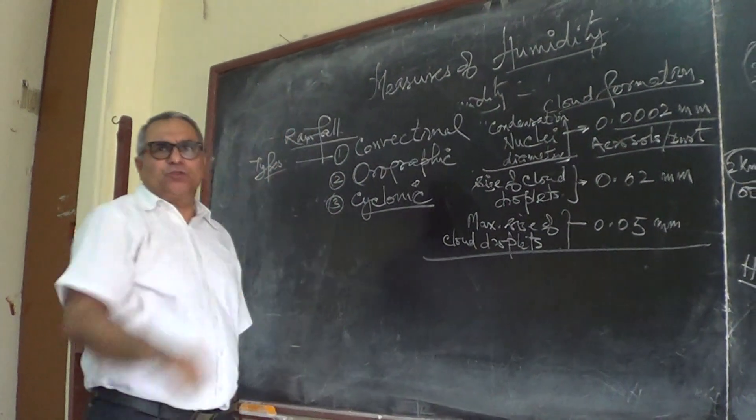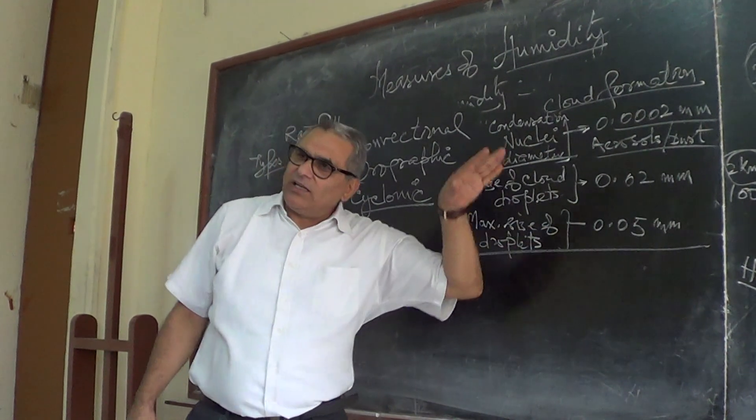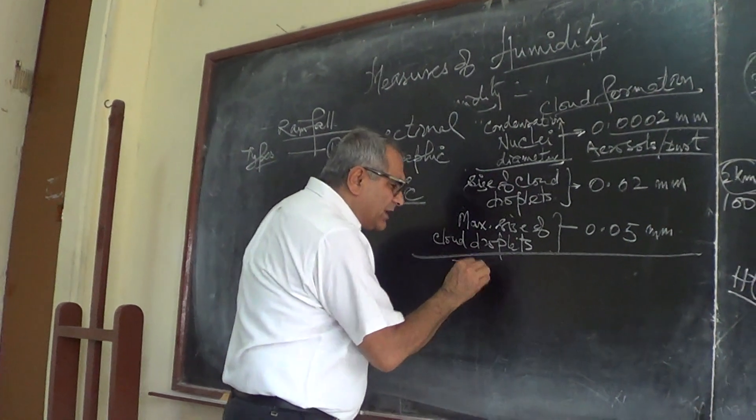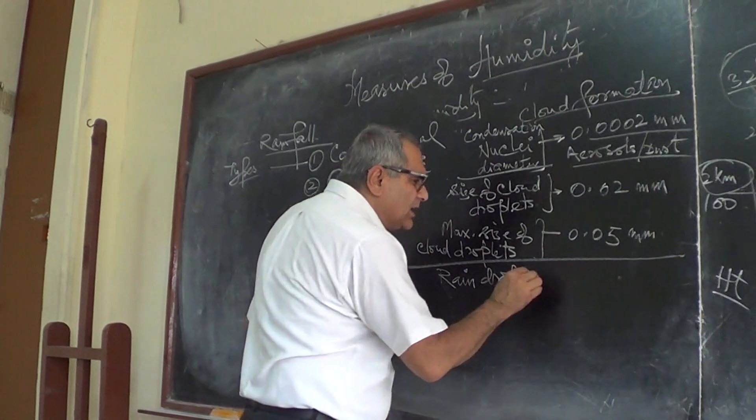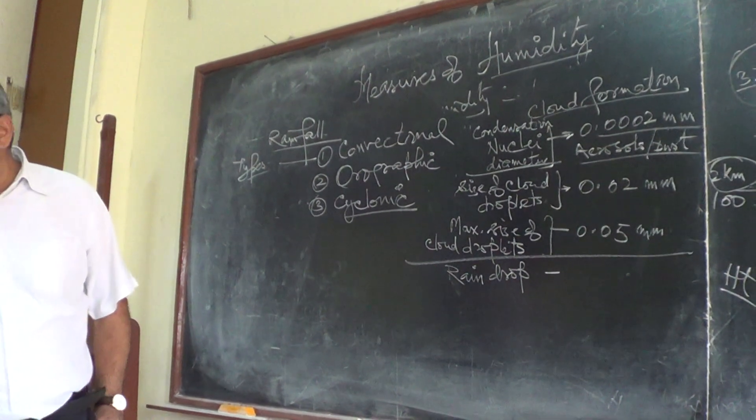These droplets become clouds of this size. But when it falls on the earth's surface, when there is rain, raindrop size is, average rain drop size is 2 mm.